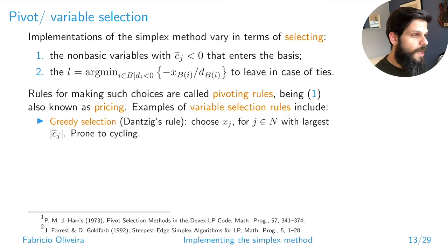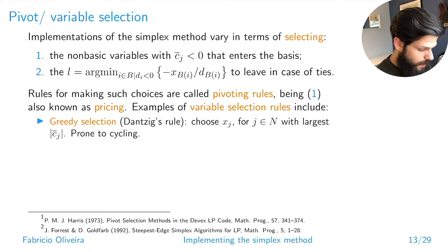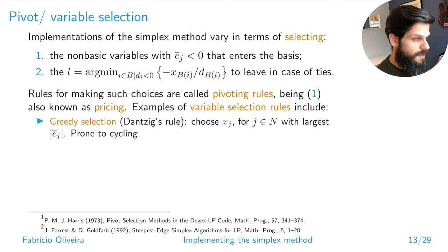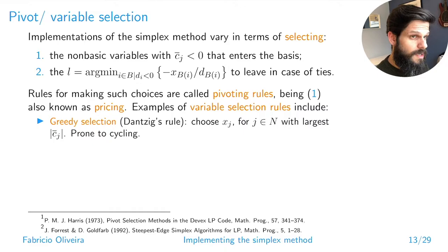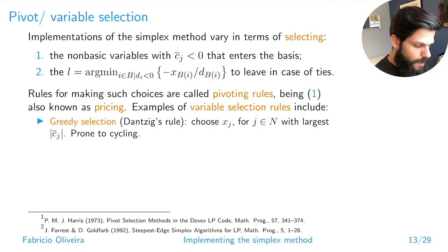Here are some common examples of variable selection rules. The first, somewhat naive one, is called greedy selection — how Dantzig originally proposed the simplex method. You look at your reduced costs and pick the one that is largest in absolute value — the most negative variable. That variable has the greatest potential for improvement in a greedy sense. Of course it depends on the value of theta, but naively, picking the largest magnitude is somewhat reasonable. However, this is prone to cycling and is known to very often lead to cycling situations.